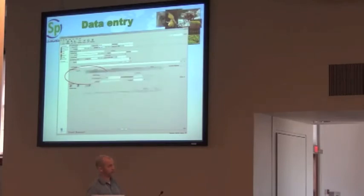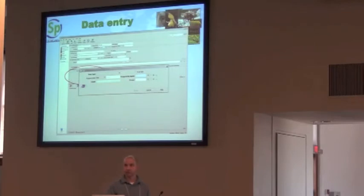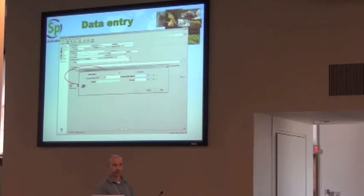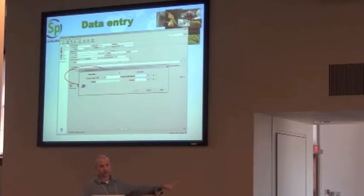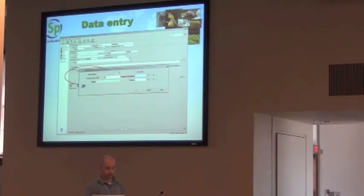Preparations work in much the same way. You have a one-to-many relationship between preparations and collection objects, so you can enter as many preparations as you want for one object. In fish collections, for example, we traditionally have material broken up into ethanol specimens, dry specimens, and skeletal specimens or tissues, and you can put as many of those into the system as you want.